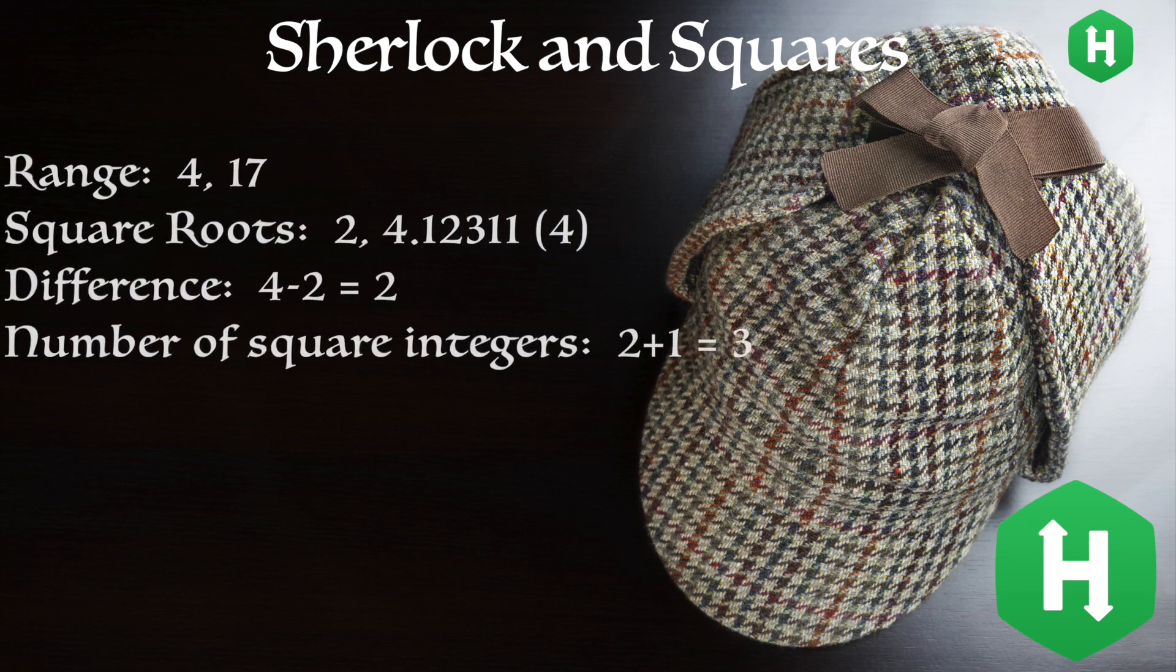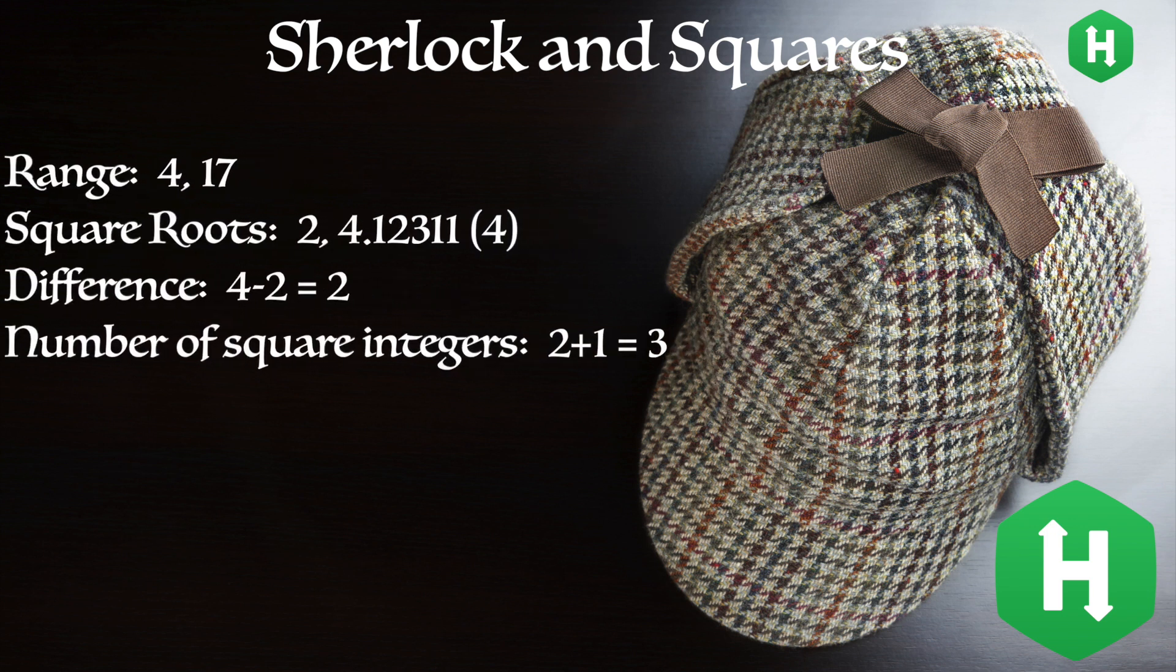However, if our range is 4 and 17, the square root of 4 is 2, but the square root of 17 is 4.12311. 17 is not a square integer, but if we round down, we get 4.